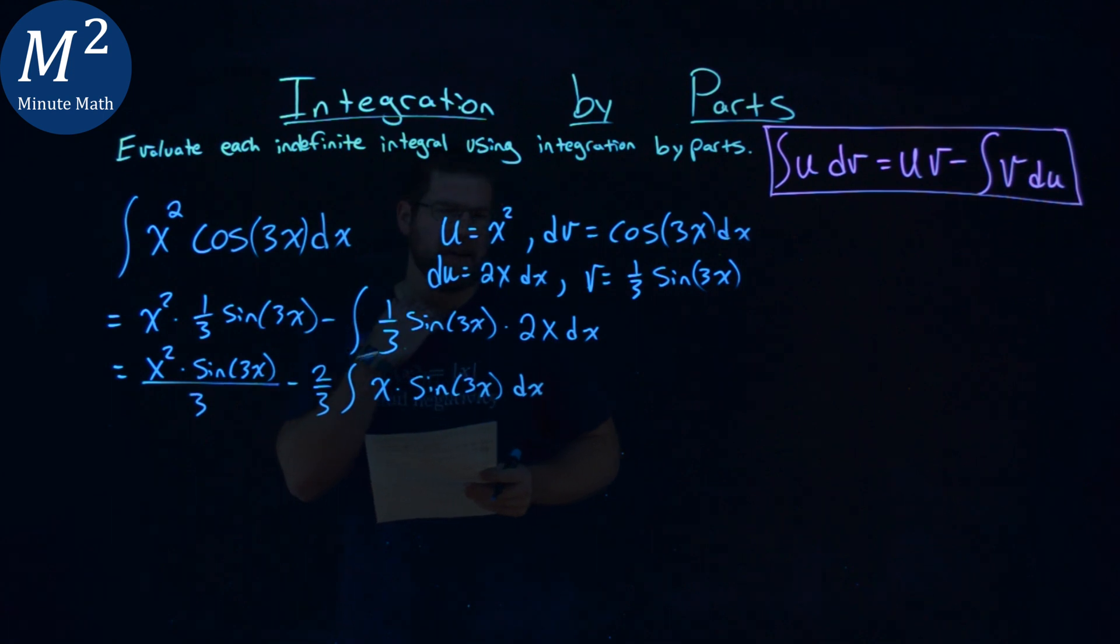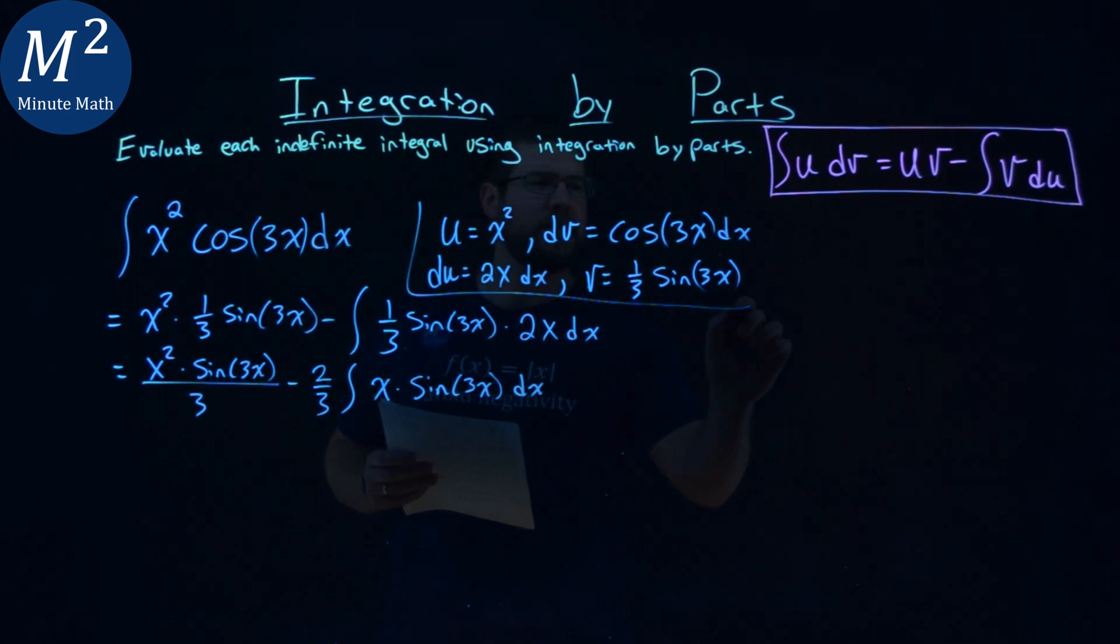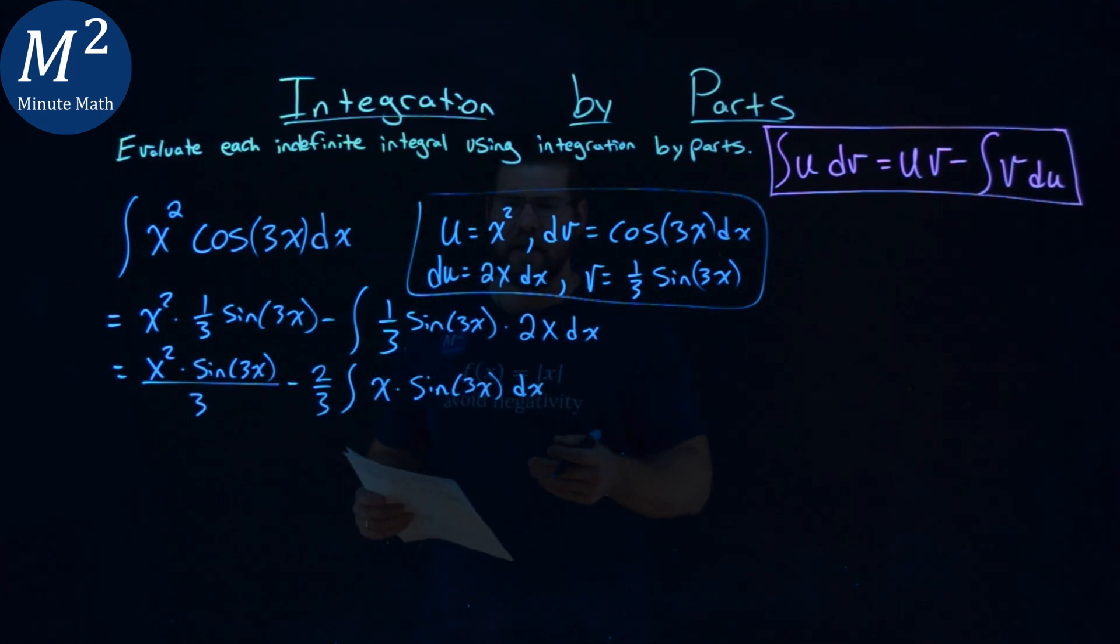This one's a little tricky. We already did our u, du, v, dv, and we still have another thing that doesn't really look neater. Well, let's do it again. Who says we can't integrate by parts a second time?